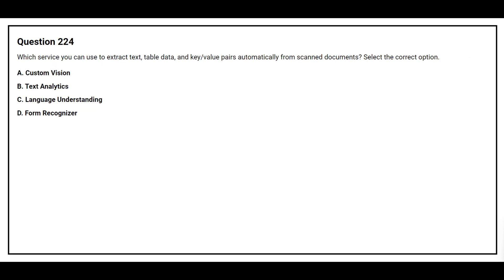Question 224: Which service can you use to extract text, table data, and key-value pairs automatically from scanned documents? Option A: Custom Vision. Option B: Text Analytics. Option C: Language. The correct answer is Option D: Form Recognizer.